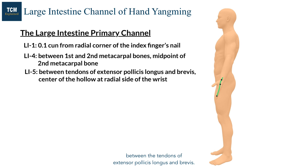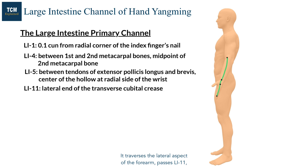It passes LI5 between the tendons of extensor pollicis longus and brevis, then traverses the lateral aspect of the forearm, passes LI11, and continues along the lateral aspect of the upper arm, reaching LI15.